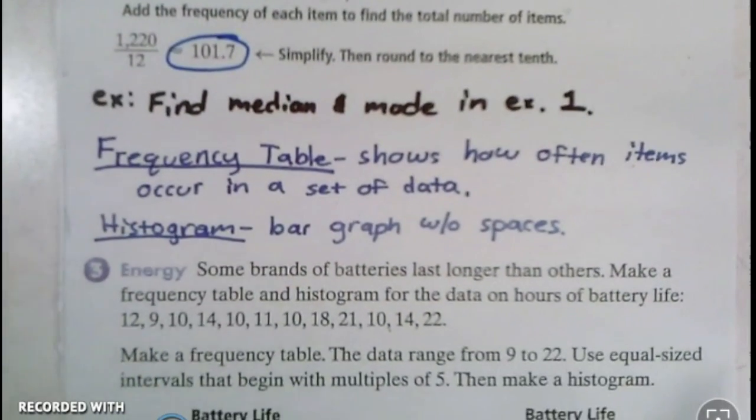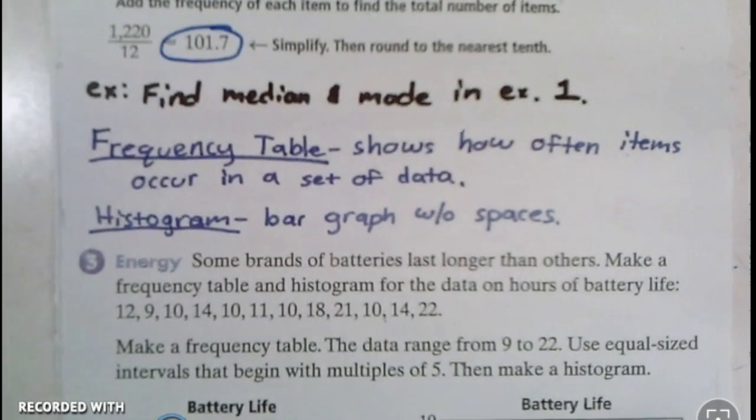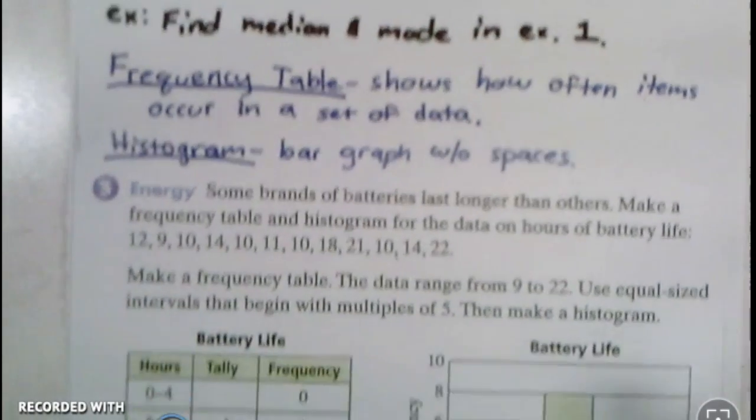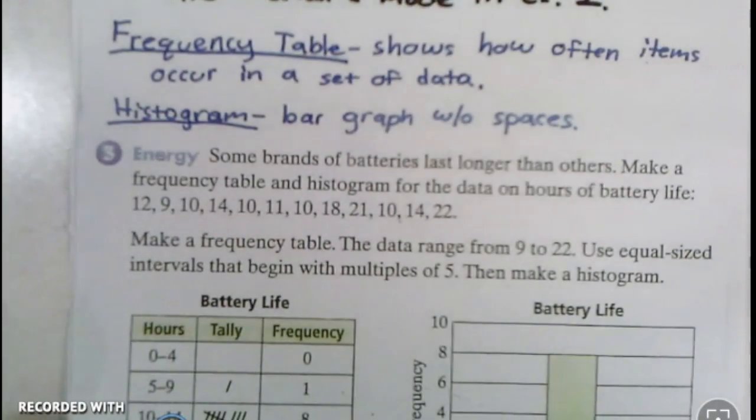Now a frequency table shows how often items occur in a set of data. A histogram is basically just a bar graph without spaces, and we already did one of those in one of our recent labs.